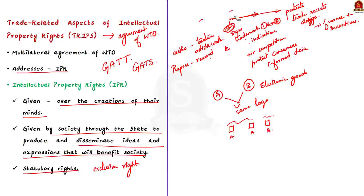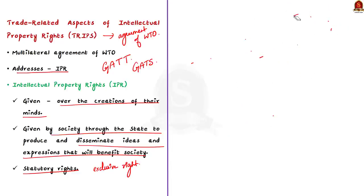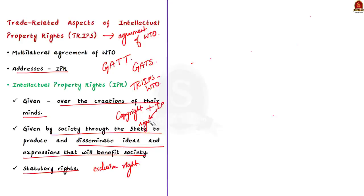We saw a brief introduction about TRIPS and some details about IPR for better understanding. Quick recap: TRIPS — Trade Related Aspects of Intellectual Property Rights — is a comprehensive agreement of WTO that addresses intellectual property rights. Under IPR we saw two main categories: copyrights and industrial property. Under industrial property we saw two categories: distinctive signs, trademarks and geographical indications on one side; and patents, industrial designs and trade secrets on the other. For copyrights, the social purpose is to encourage and reward creative work. For industrial properties, the social purpose is to incentivize and finance research and developmental activities.